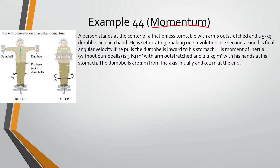So a person stands at the center of a frictionless turntable with arms outstretched and a 5kg dumbbell in each hand. He is set rotating, making 1 revolution in 2 seconds. Find his final angular velocity if he pulls his dumbbells inwards to his stomach. His moment of inertia without dumbbells is 3 kg·m² with arms outstretched and 2.2 kg·m² with hands at his stomach. The dumbbells are 1m from the axis initially and 0.2m at the end.